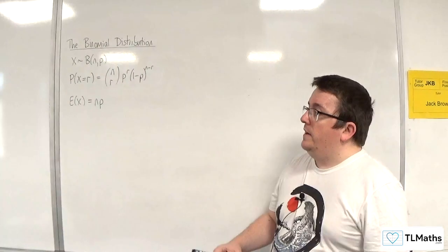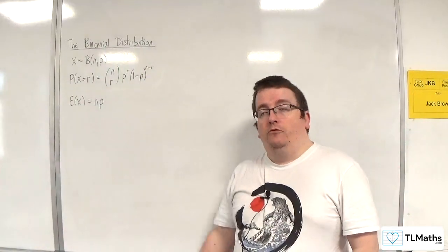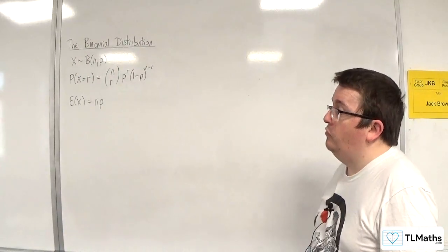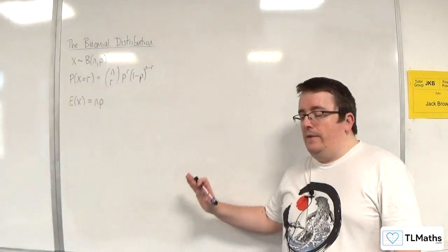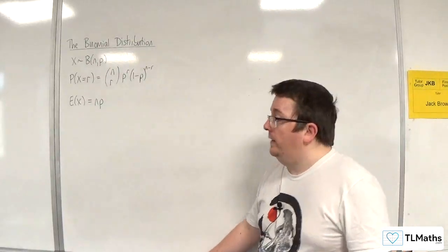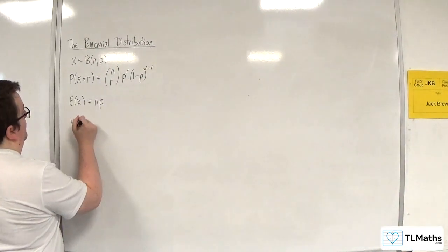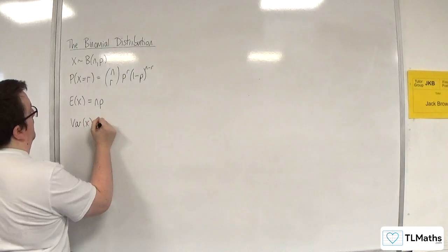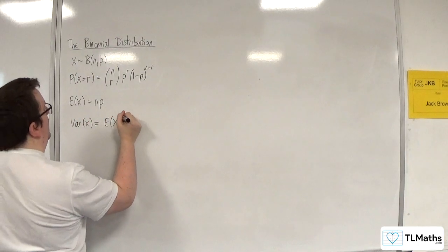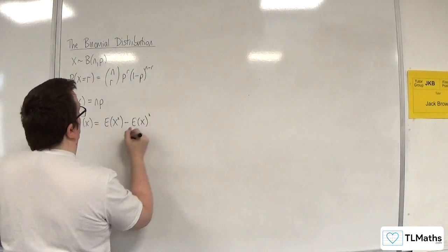In the previous video, I derived that E(x) is equal to n times p for a binomial distribution with n independent trials and p, the probability of success. In this video, I want to derive the formula for Var(x). I know that Var(x), for a discrete probability distribution, is E(x²) take away E(x) all squared.